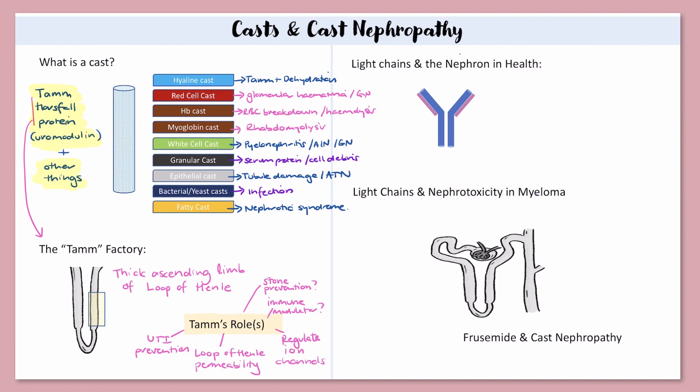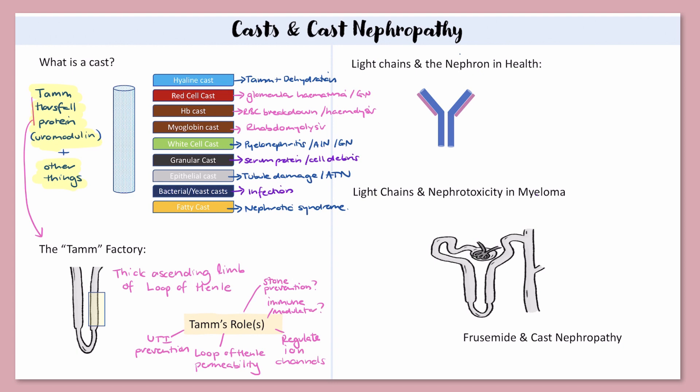Cast nephropathy occurs in myeloma and is the result of light chains meeting up with Tam and forming light chain casts. Let's unpack that in a little more detail.